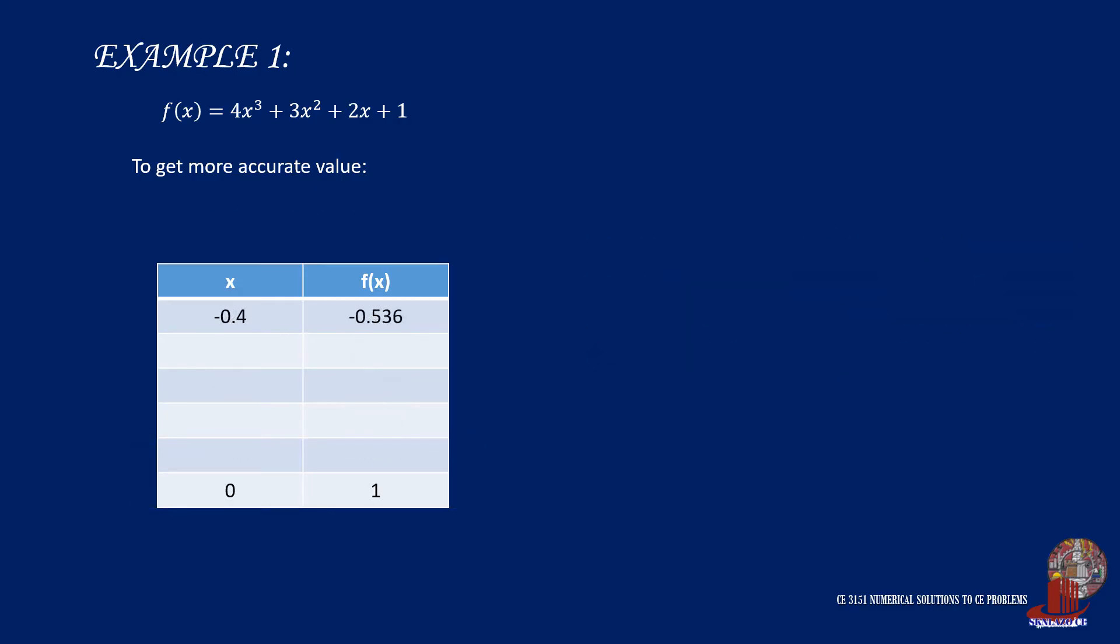Let's continue solving for the root using the second decimal place. By limiting our values between -0.4 and 0, we can choose to get an increment of 0.05. Working with -0.35 as x, we can compute for f(x) as -0.239.